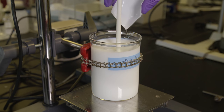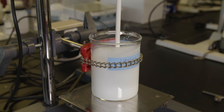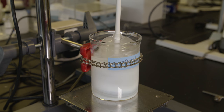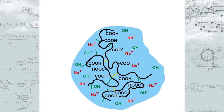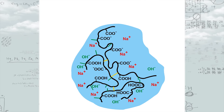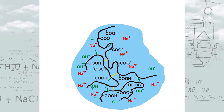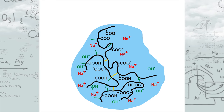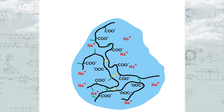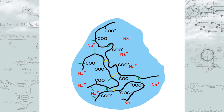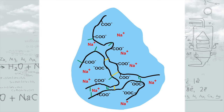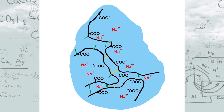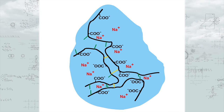Upon the addition of a neutralizer — in this case sodium hydroxide — the solution begins to clarify and thicken. In the solution, the sodium hydroxide dissociates into sodium cations and hydroxide anions. The negatively charged hydroxide ions neutralize the protons, resulting in deprotonation of the carboxylic acid groups. At a pH of 7, the carboxylic acids are negatively charged carboxylates that electrostatically repel each other.